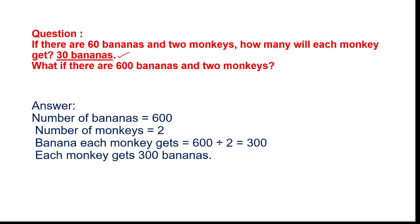Next question: what if there are six hundred bananas and two monkeys? You will divide six hundred by two, and you will get three hundred as the answer.